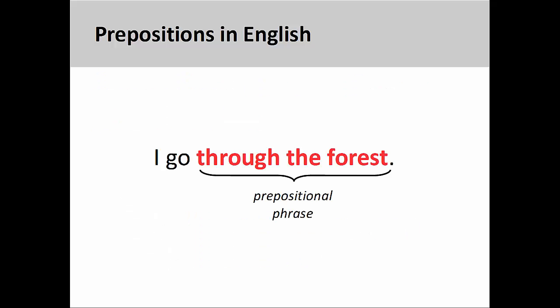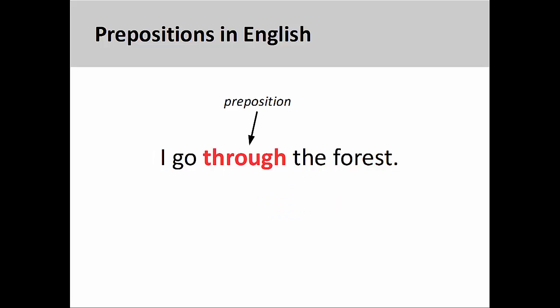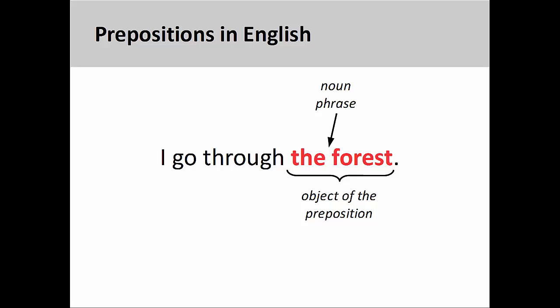In English, a prepositional phrase is a group of words that functions either as an adjective or an adverb in a sentence. That is to say, it could modify either a noun or a verb. At its most basic level, a prepositional phrase consists of a preposition and the object of the preposition. Here, the object of the preposition is a simple noun phrase — the forest — although the object could contain other modifiers.